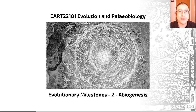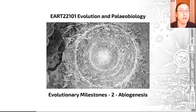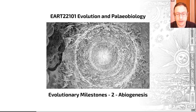Hello there and welcome back to video two in our series on evolutionary milestones for evolution and paleobiology here at the University of Manchester. In this video we're going to look at where the material required for abiogenesis, or the origin of life, might have come from in terms of the early Earth. We'll then look at abiogenesis itself and I'll present two ways in which this may have occurred before finishing by highlighting some uncertainties.